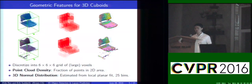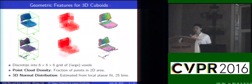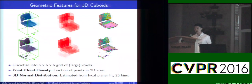Given two cuboids, we first discretize them into 6-by-6 voxels, and for each voxel we compute the features and compare them together. For the geometric features, we make use of the traditional approach of point cloud density feature and 3D normal distribution feature. However, for those features, we are just making use of the 3D point cloud itself, and we are throwing away really important information — that is the original RGB image.